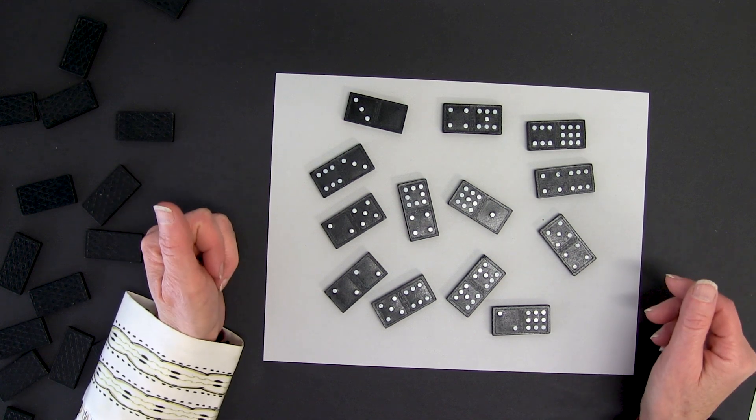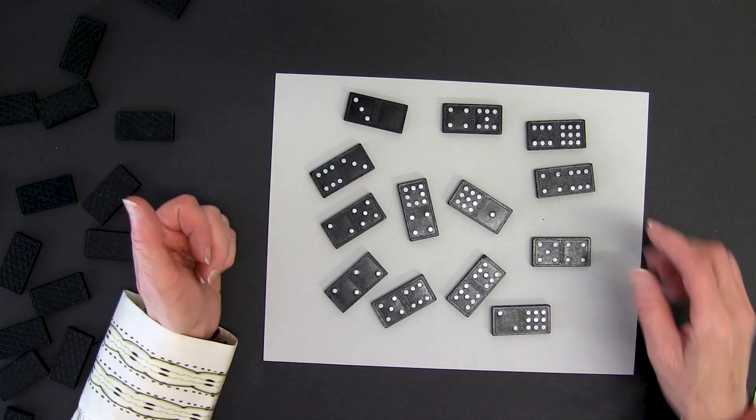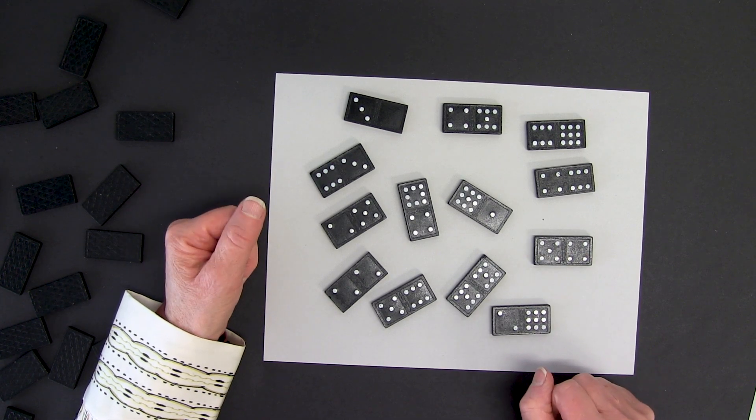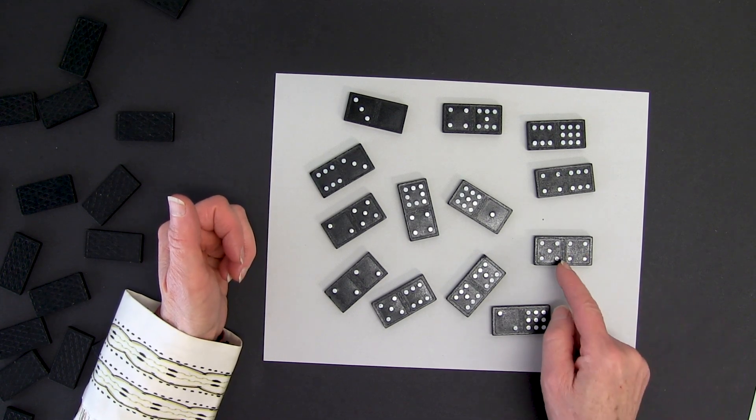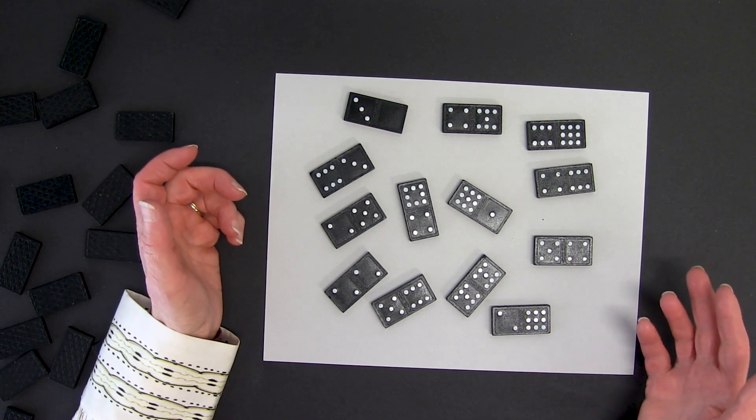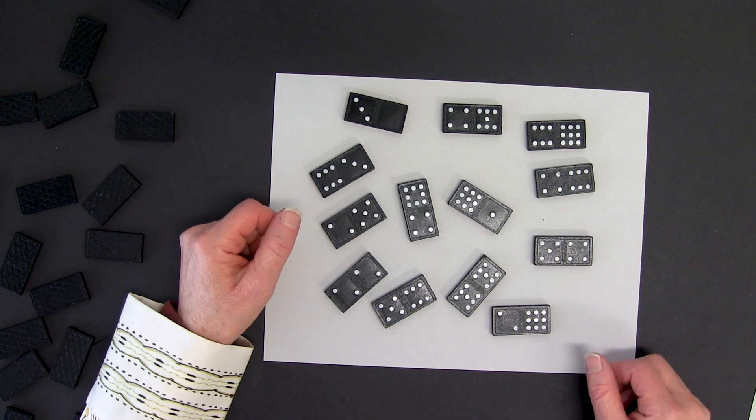I could take another domino. For example, this one. And I could use it to make 54. I know that 54 is a composite number. And one of the quickest ways I know that is because it's an even number.